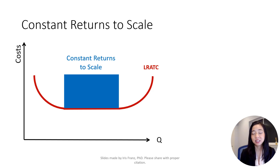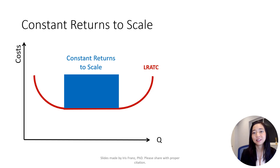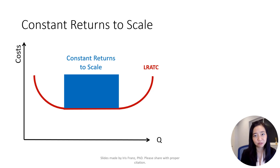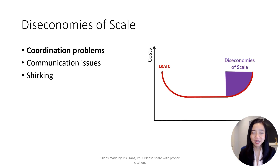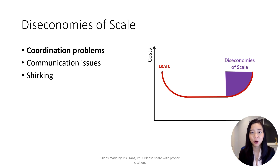As the firm continues to expand, the benefits of greater quantity gradually wear off. As such, the firm experiences a stage where the long-run average total cost remains the same, which we call constant returns to scale. Finally, when the firm becomes very large, the long-run average total cost will start to rise, which we call diseconomies of scale.